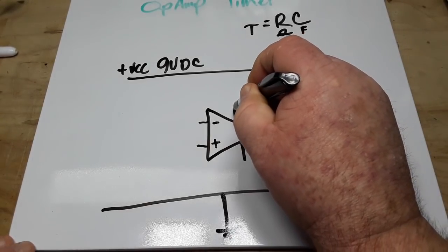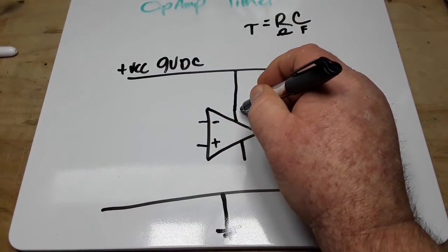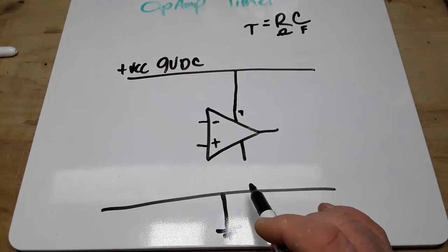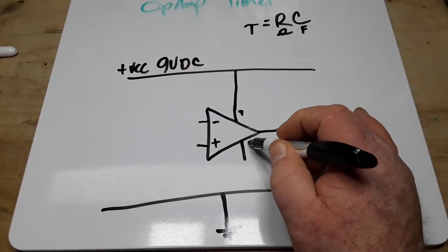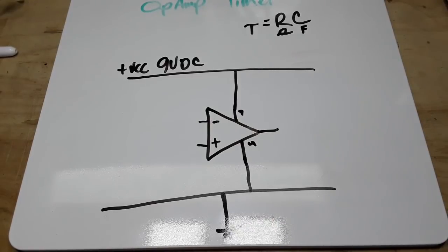So our positive VCC, that's pin 7, that goes to the VCC rail. And then our ground or negative VCC pin 4 here is going to go to ground.